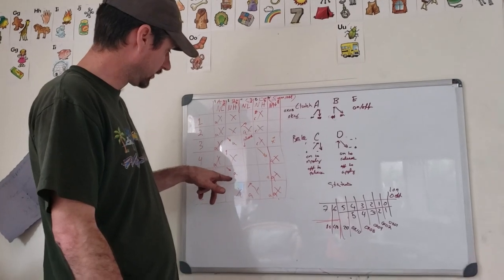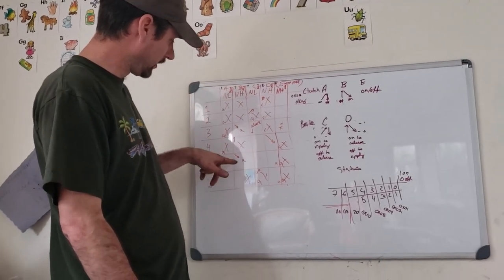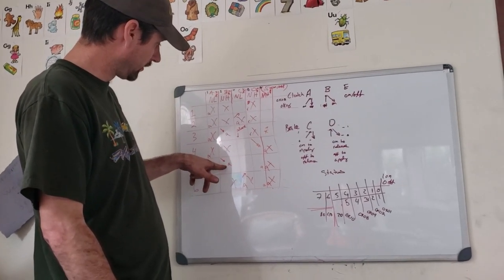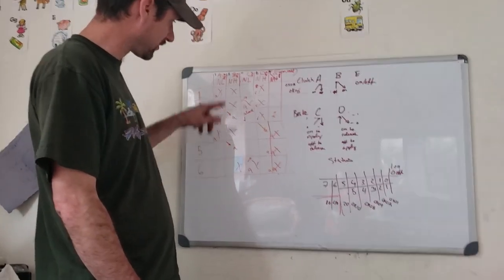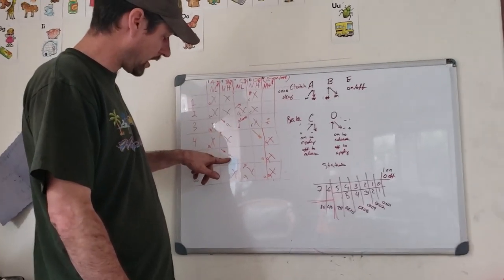And then 5th gear, we turn off A, and then by PWMing down, so it was on, we're going to PWM down shift solenoid B to apply the clutch.